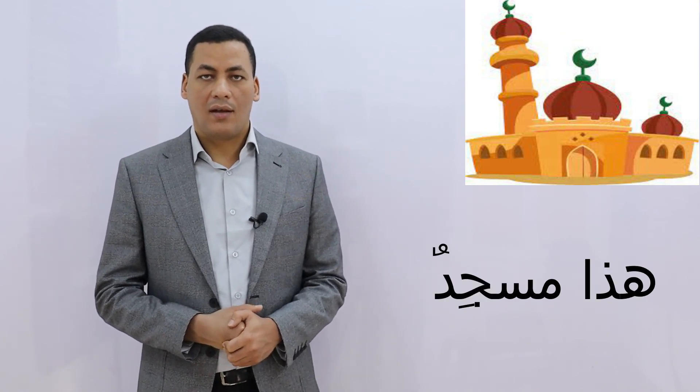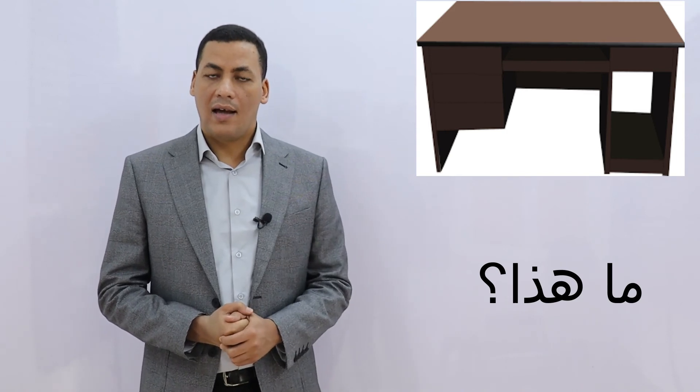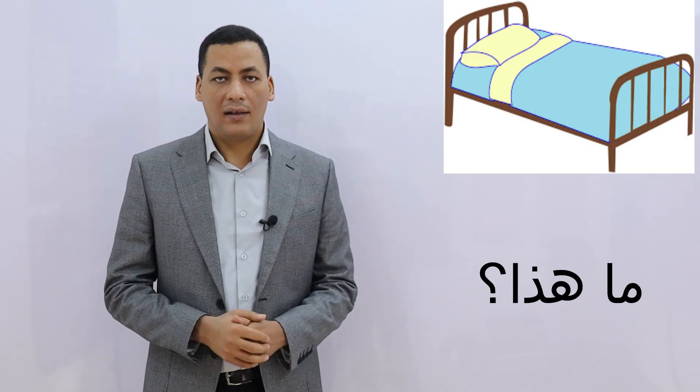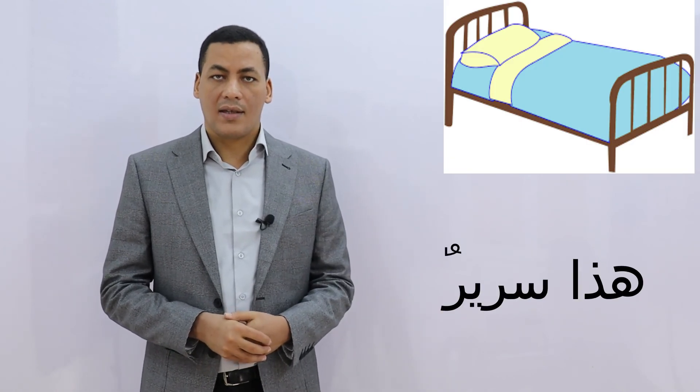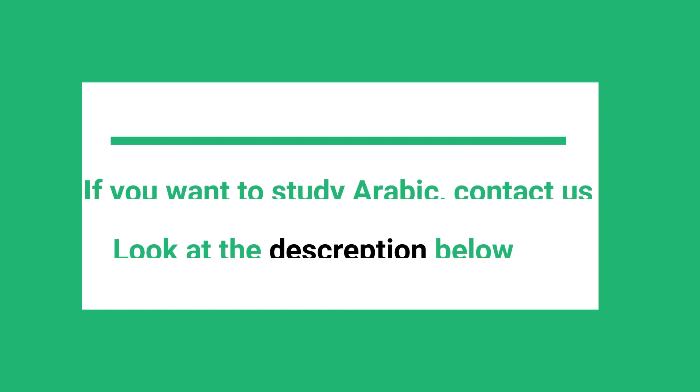'Ma haza?' — 'haza maqtab' (this is an office), and so on with other examples. This is how we form the question 'what is this?' as well as 'is this so and so?'